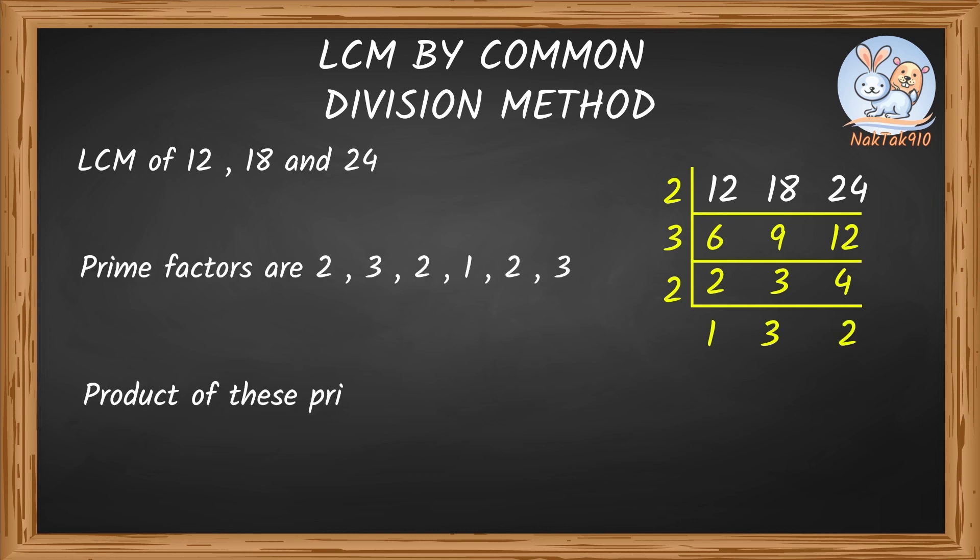Let's multiply all the prime factors. 2 times 3 times 2 times 1 times 3 times 2. 2 times 3 is 6. 6 times 2 is 12. 3 times 2 is 6. So 12 times 6 is 72. That means LCM of 12, 18, and 24 is 72.